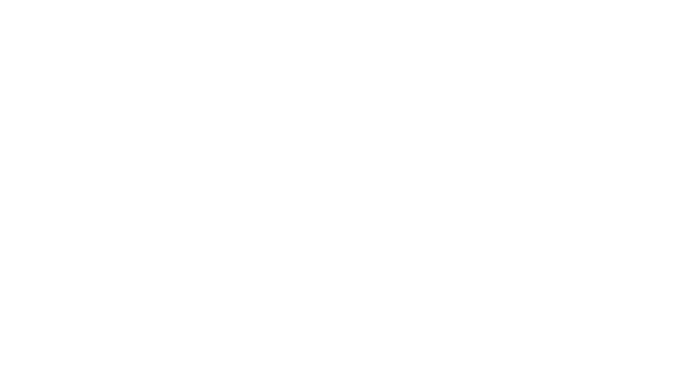The first derivative tells us about where the original function is increasing and decreasing. We think of the first derivative as describing the slope or the rate of change of the function. So the first derivative tells us the rate of change of the function values, of the outputs of the function, how they're changing over time.